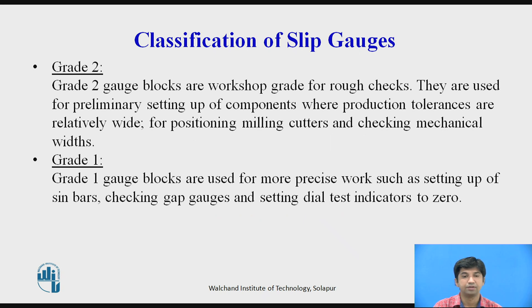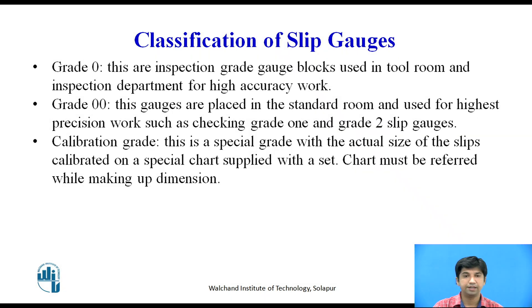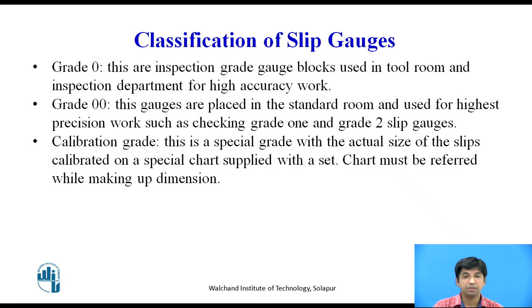Classification of slip gauges up to 90 mm length: Grade 2 gauge blocks are workshop grade for rough checks, used for preliminary setting up where production tolerances are relatively wide, and for positioning milling cutters. Grade 1 is used for more precise work such as setting up sine bars, checking gap gauges, and setting dial indicators to zero. Grade 0 is the inspection grade used in tool rooms for high accuracy work. Grade 00 is placed in the standard room for highest precision work such as checking Grade 1 and Grade 2 slip gauges.